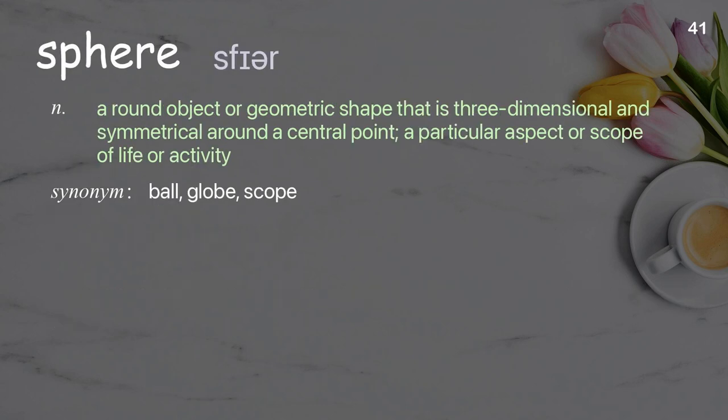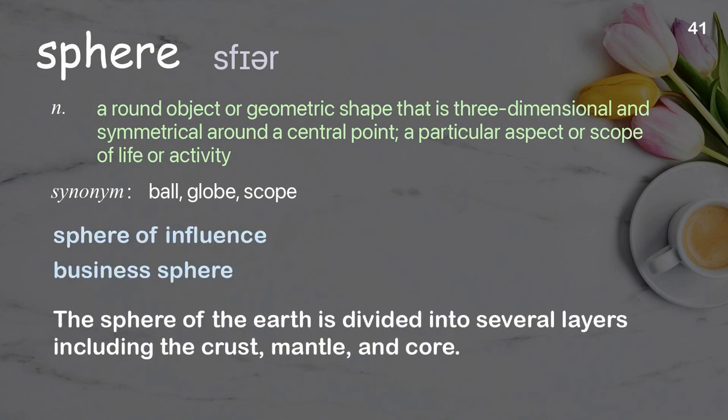Sphere. A round object or geometric shape that is three-dimensional and symmetrical around a central point; a particular aspect or scope of life or activity. Examples: sphere of influence, business sphere. The sphere of the earth is divided into several layers, including the crust, mantle, and core.